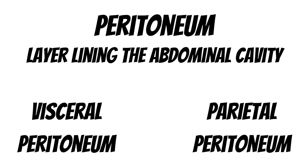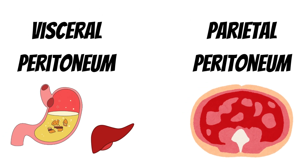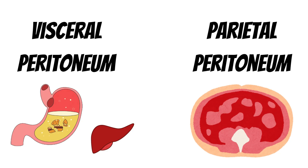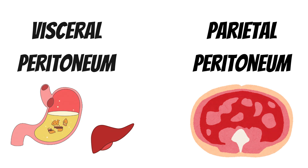The peritoneum can be divided into visceral peritoneum and parietal peritoneum. Visceral peritoneum is the layer which lines the internal abdominal organs such as the stomach and liver, while parietal peritoneum is the innermost layer of the abdominal cavity.